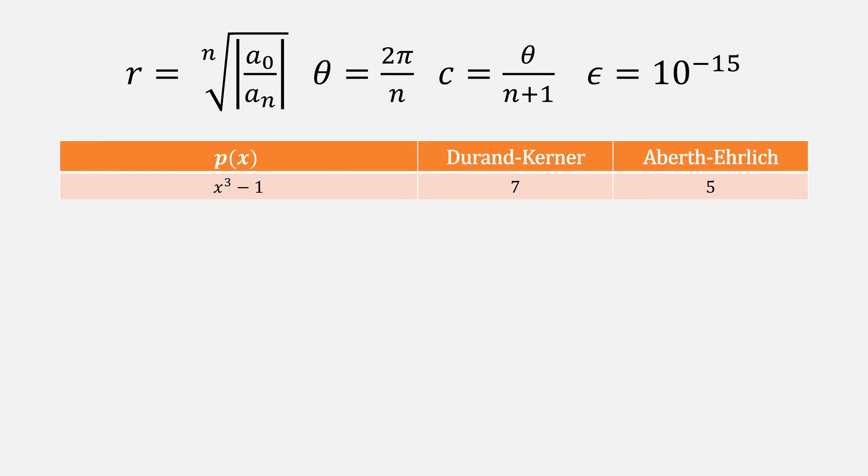Our first function, Aberth-Ehrlich saves two iterations. The one we just solved, Aberth saves three.